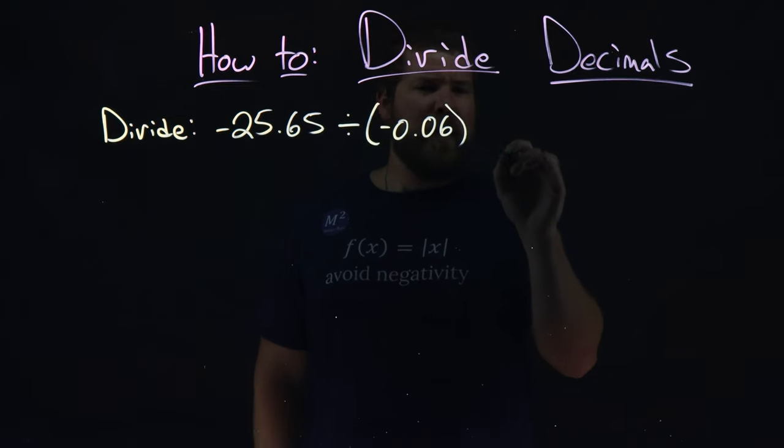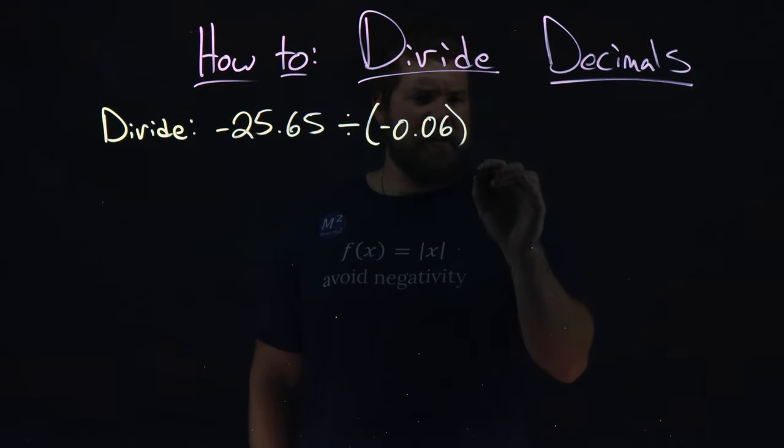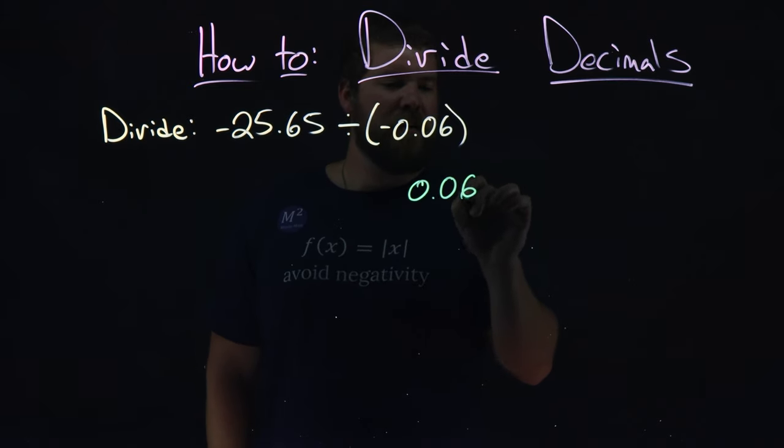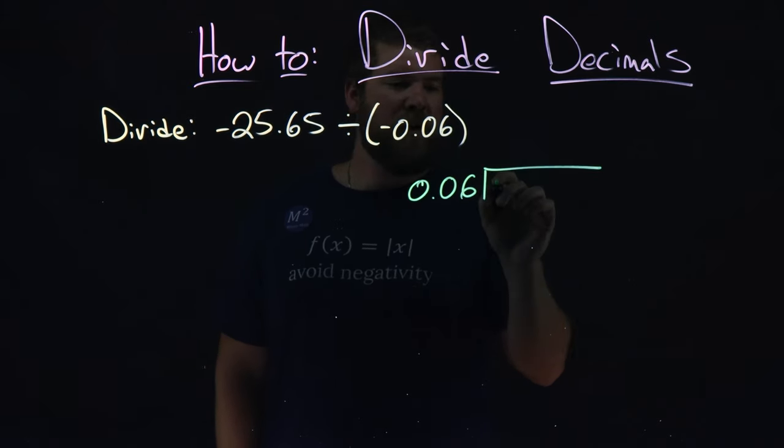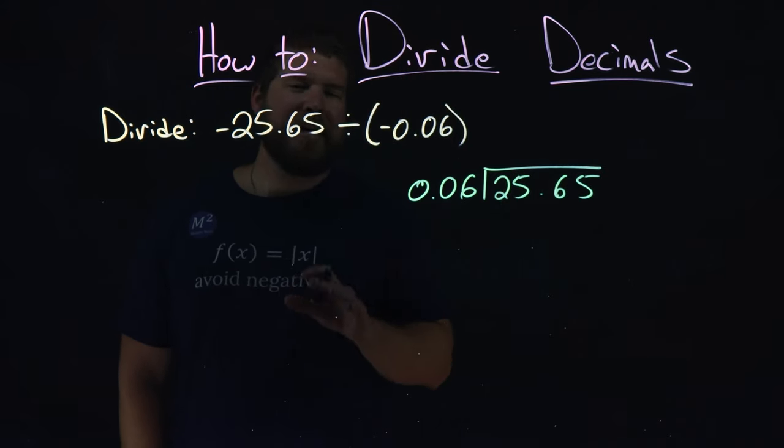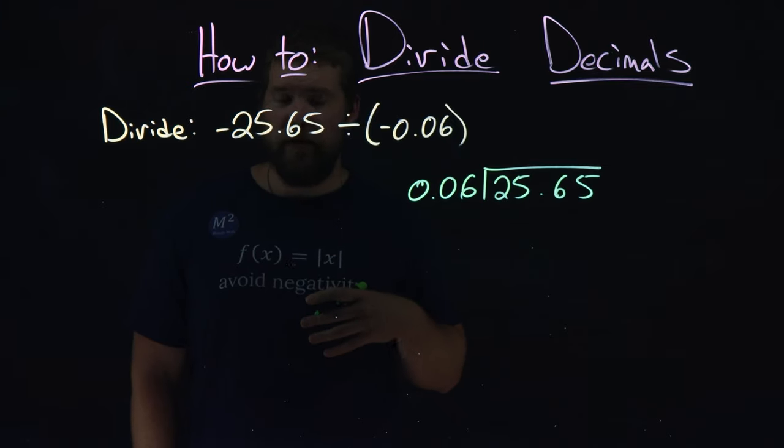So let's set this up. Let's do long division here. 0.06 goes into 25.65. I'm ignoring the negatives because we know it's going to be positive.